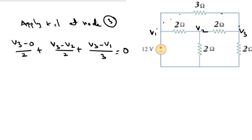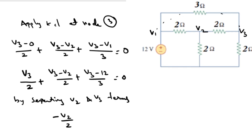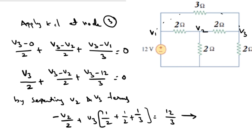We already know V1 = 12 volts. Substituting: V3 by 2, plus V3 minus V2 by 2, plus V3 minus 12 by 3, equals 0. By separating V2 and V3 terms, the equation becomes: minus V2 by 2, plus V3 into (1/2 + 1/2 + 1/3), equals 12 by 3. This is equation number 2.